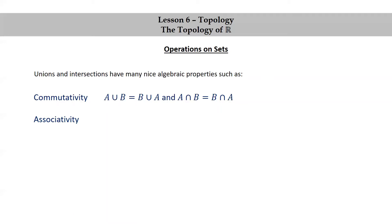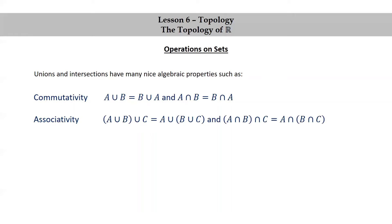We have associativity. A union (B union C) is equal to (A union B) union C. And for the intersection, A intersect (B intersect C) is equal to (A intersect B) intersect C.